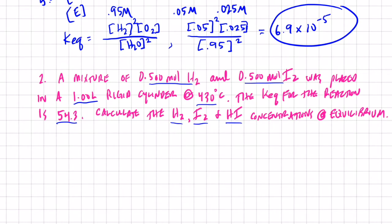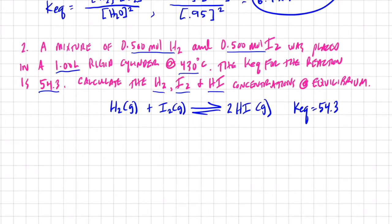So I want to find the equilibrium concentrations of hydrogen, iodine, and hydrogen iodide at equilibrium. Let me give you the reaction for this. We've actually seen it before. We have H2 gas plus I2 gas at equilibrium with 2 HI gas. Now the Keq I gave to you this time, 54.3 at a temperature of 430 degrees Celsius.